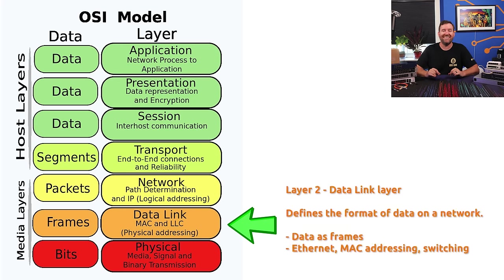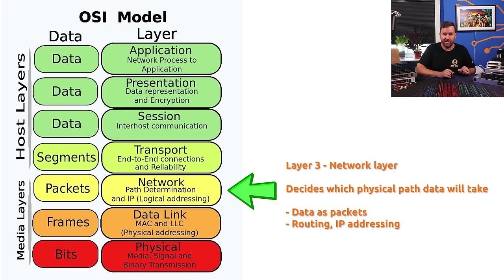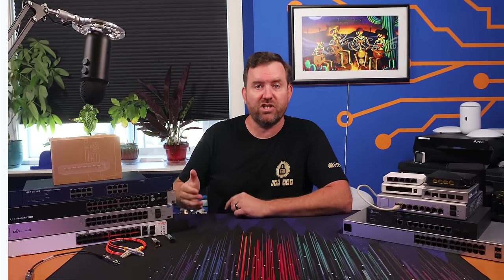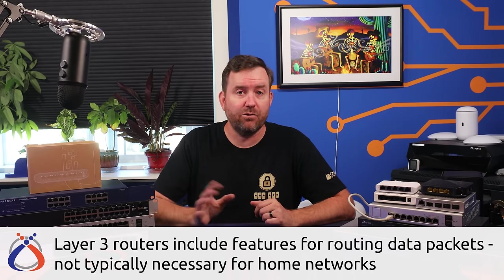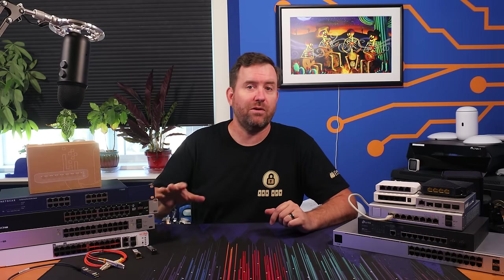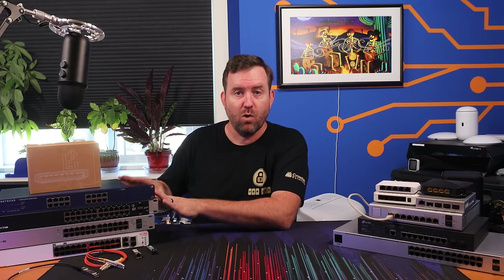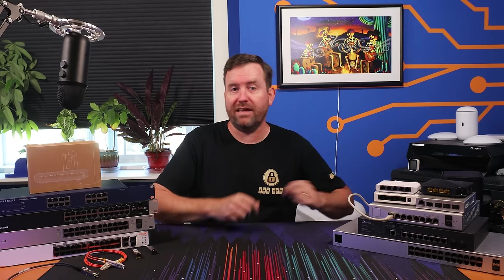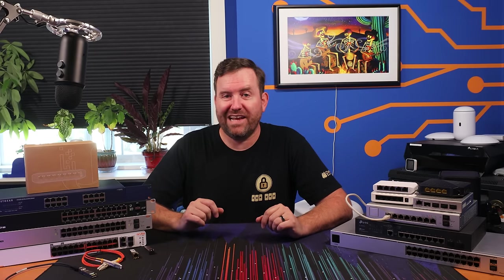Layer two versus layer three refers to what's known as the OSI network model — a seven-layer conceptual model representing all of the various elements of networking, from the physical cable all the way up to the application displayed on your computer monitor. Layer two of the OSI model refers to the data link layer, which includes ethernet as well as switching at the hardware level. Layer three refers to the network layer, which includes routing and IP addressing. So with a layer three switch, this means that particular model goes beyond simple ethernet port connectivity and also includes features related to actually routing traffic. Layer three switches are typically seen in very large networks where it makes sense to reduce traffic by doing some of the routing at the switch level rather than having all packets go all the way back to the router. In general, home users will never need to use layer three switching, but it is good to understand that the concept exists.